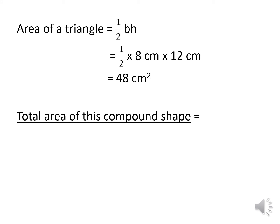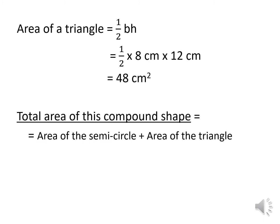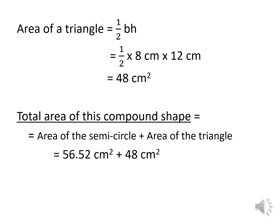We have to find the total area of this compound shape. Total area means the area of the triangle plus the area of the semicircle — we add them together. Area of the semicircle is 56.52 centimeter square and area of the triangle is 48 centimeter square. Add them together and the total value is 104.52 centimeter square. This is the total area of this compound shape.